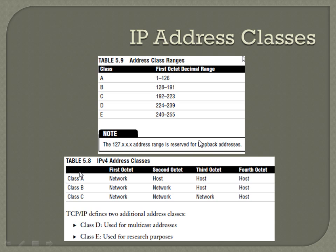Anything from 128 to 191 is going to be a Class B address. 192 through 223 is going to be Class C. 224 through 239 is going to be Class D. And 240 through 255 is Class E.